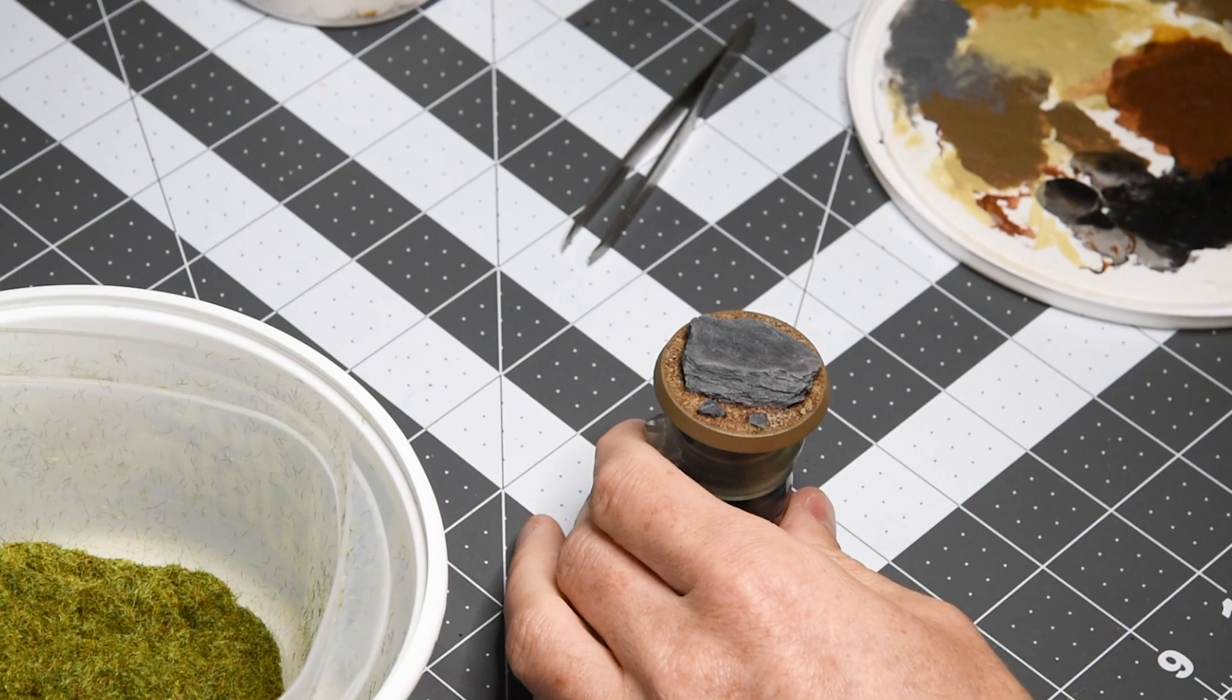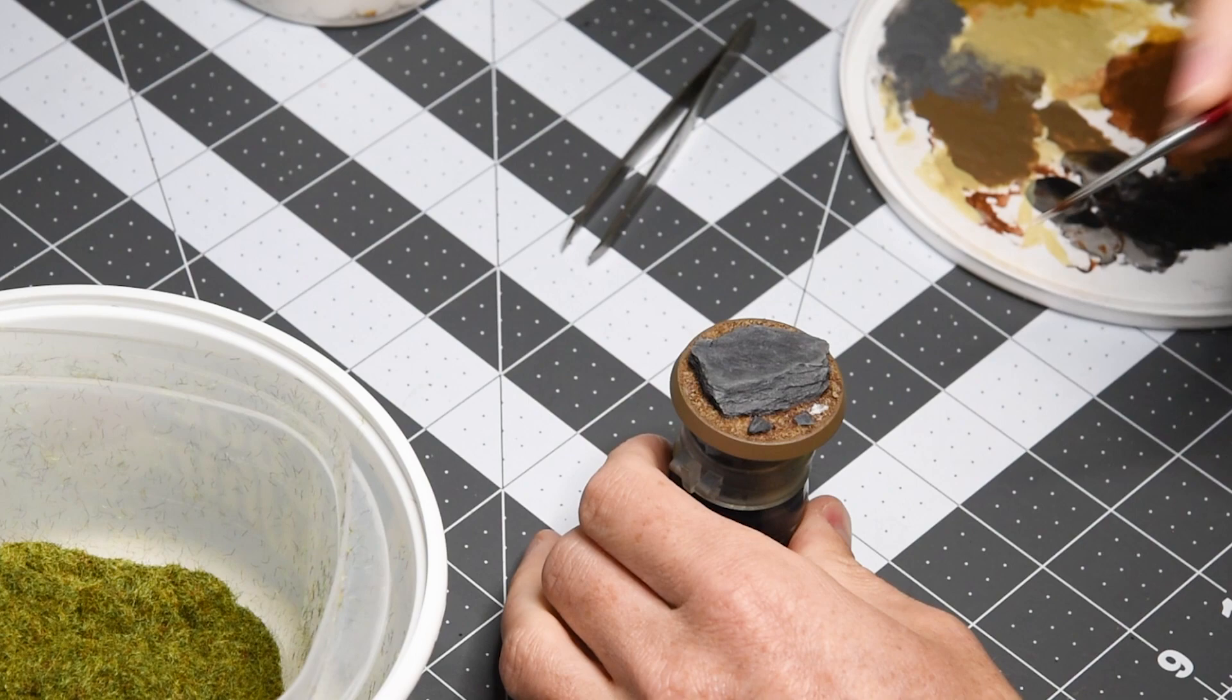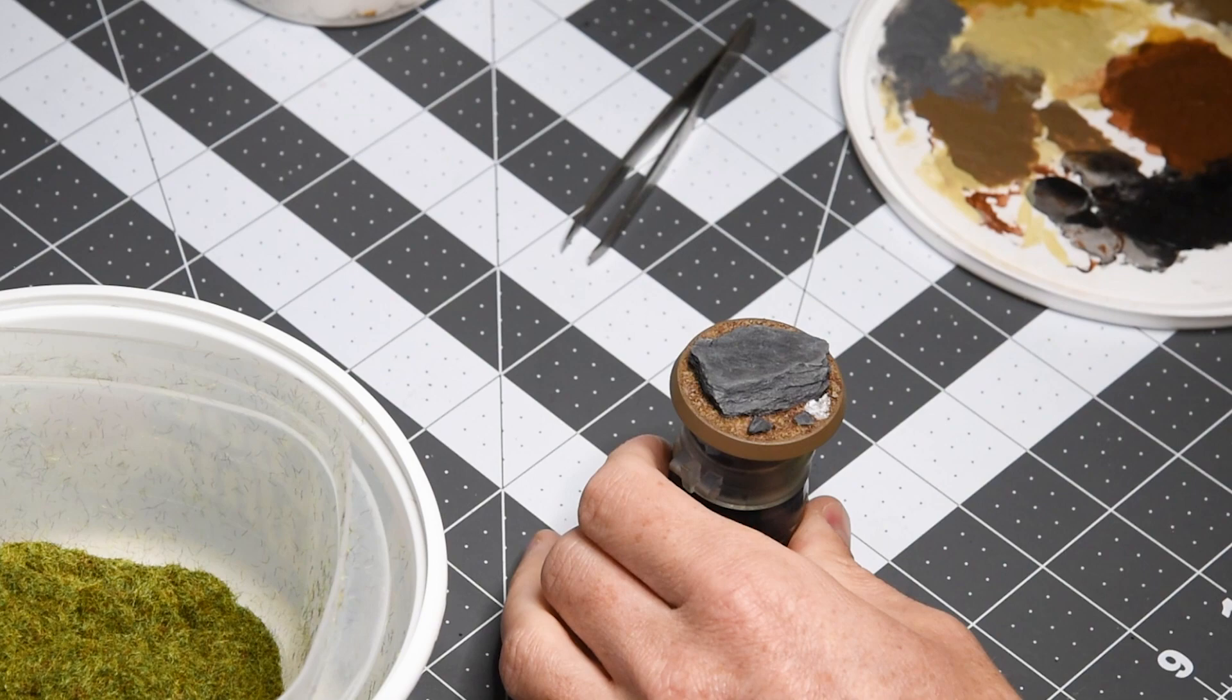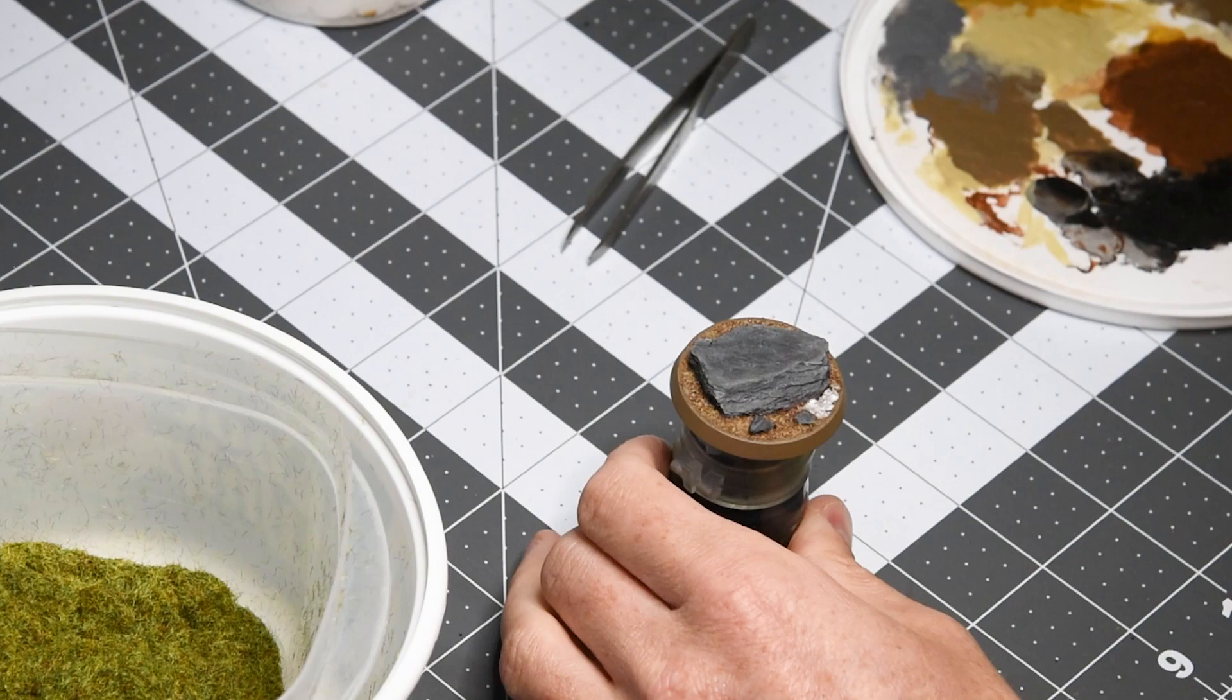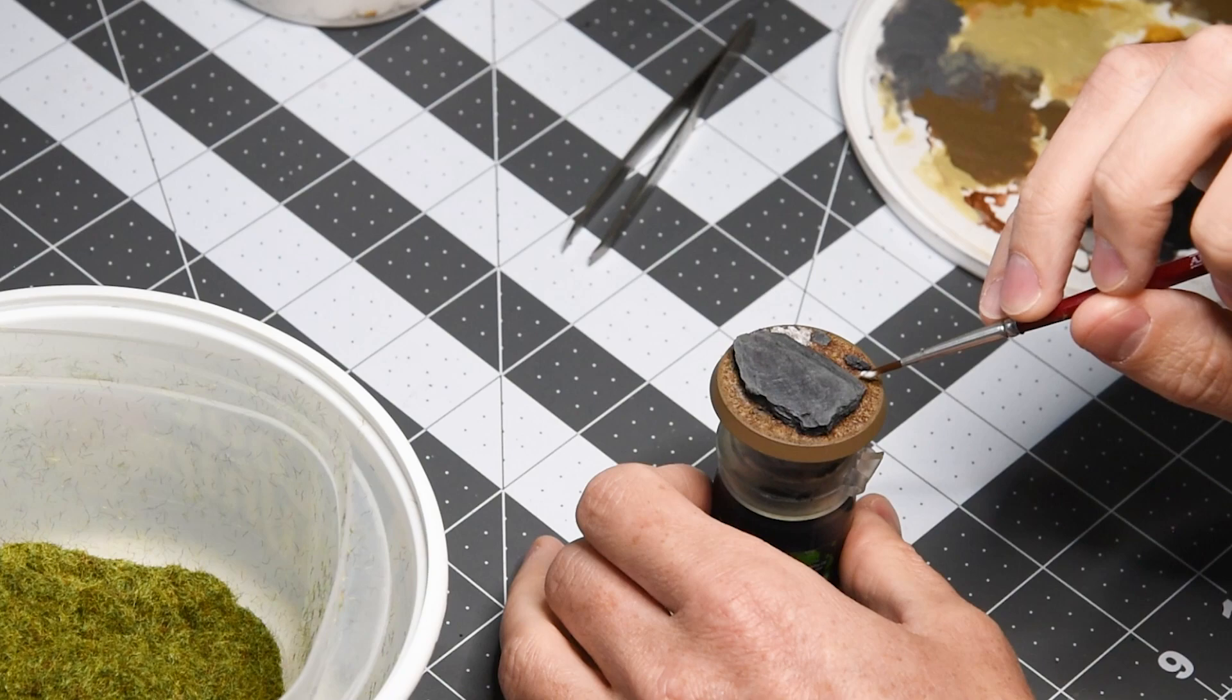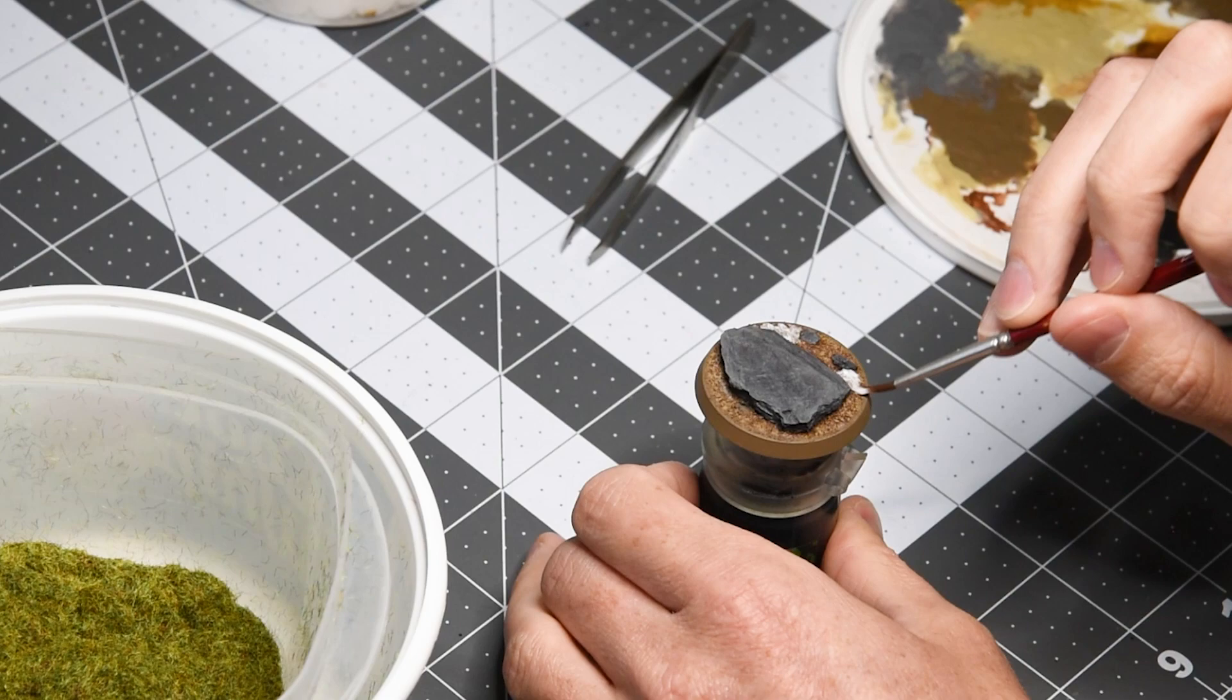And now you see the result from adding the Nuln Oil. We're going to finish here with a final step of this project which is applying the static grass. Now you see I have that tub on the left there of the static grass. I'm selectively applying where I think the grass might grow around the rocks.